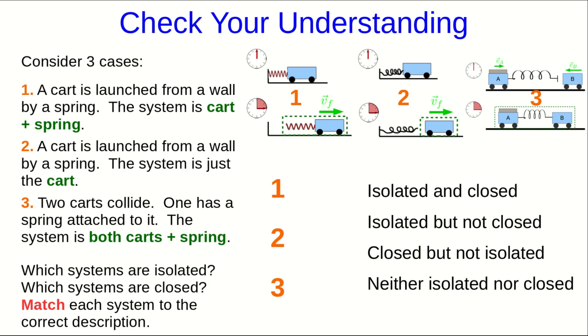Let's think of three cases. One is a cart launched from a wall by a spring, with the cart and the spring both in the system. Another is a cart launched from a wall by a spring, but with the system being just the cart. The third situation is two carts colliding. One of them has a spring attached to it, and the system is both carts and the spring. Think about which of these systems are isolated and which of them are closed, and match each system to the correct description.